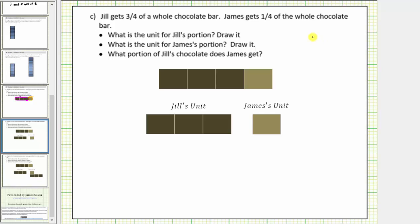And now let's look at the last question. What portion of Jill's chocolate does James get? So for this question, we're no longer comparing to the whole chocolate bar. In this case, we're comparing James's amount to Jill's amount.